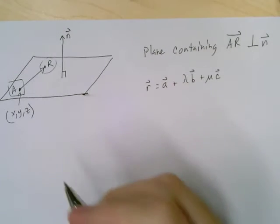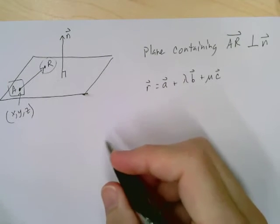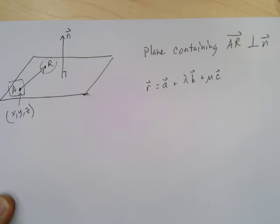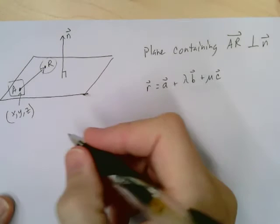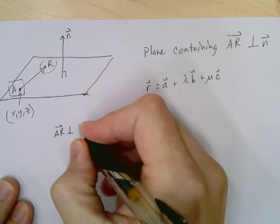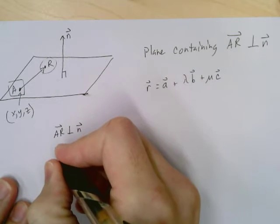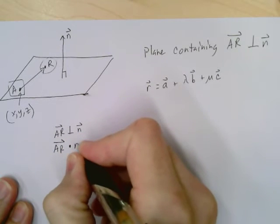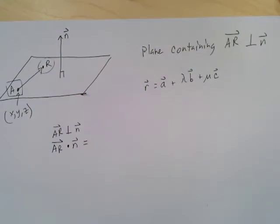Let's consider if this is really perpendicular to N, what does that mean? Well, that means that AR is perpendicular to N. That means that AR dot product N equals, mini drum roll, zero.